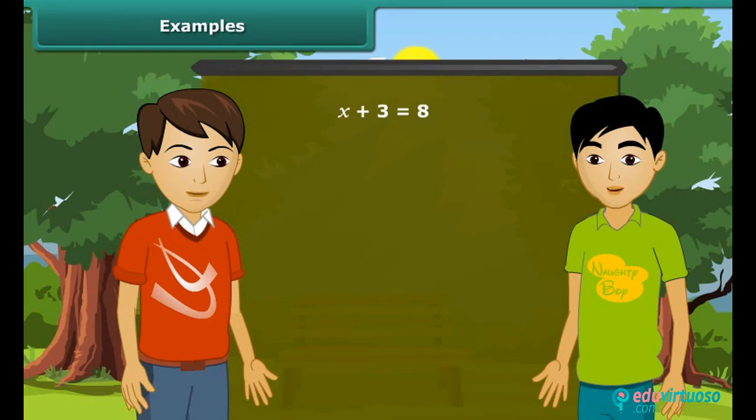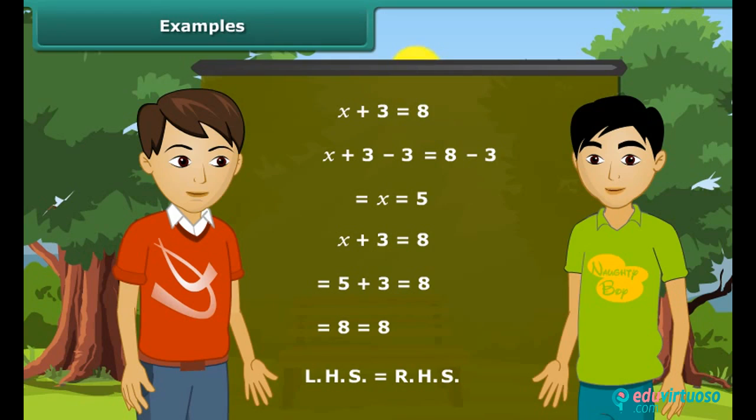Let us take an equation: X plus 3 is equal to 8. We shall subtract 3 from both sides of this equation. The new LHS is X plus 3 minus 3, which is equal to X. And the new RHS is 8 minus 3 is equal to 5. Therefore, we get X as 5. But why should we subtract 3 and not some other number? It is because subtracting 3 reduces the LHS to X. Are you sure that this answer is true? We can check this by placing the answer in place of X. If left hand side is equal to right hand side, then the answer is correct. We can see that here LHS is equal to RHS. Hence, our answer is correct.